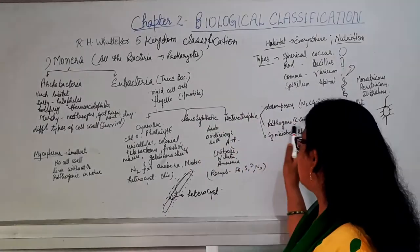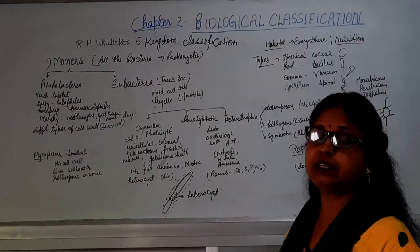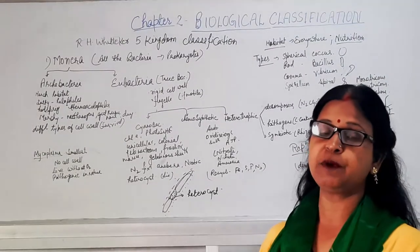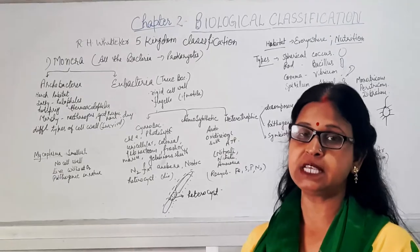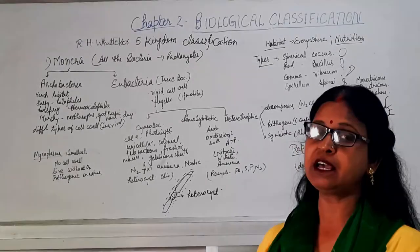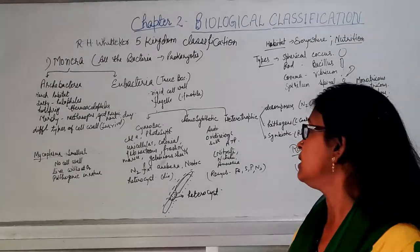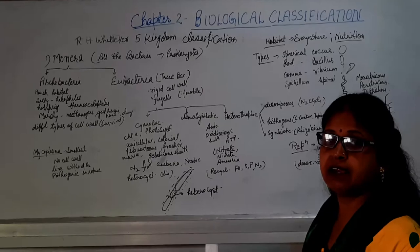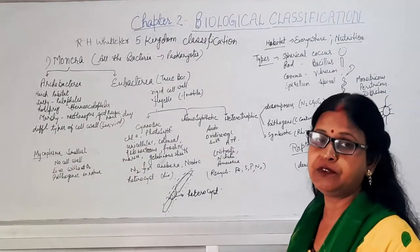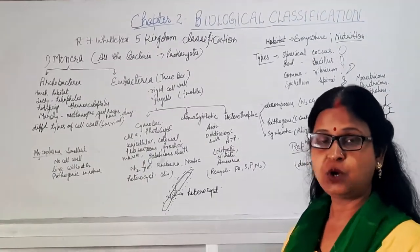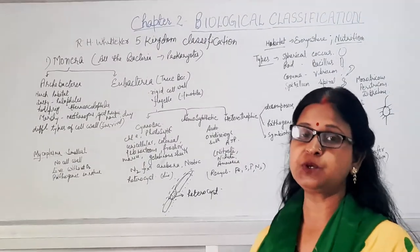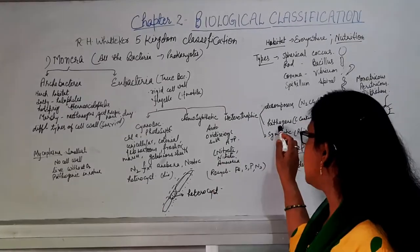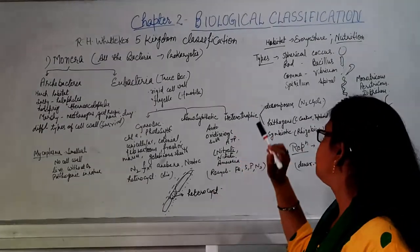Pathogenic bacteria are heterotrophic and responsible for various types of diseases — they are parasitic in nature. In plants they cause diseases like citrus canker, and in animals they cause typhoid, jaundice, etc. So different types of diseases are caused by bacteria.